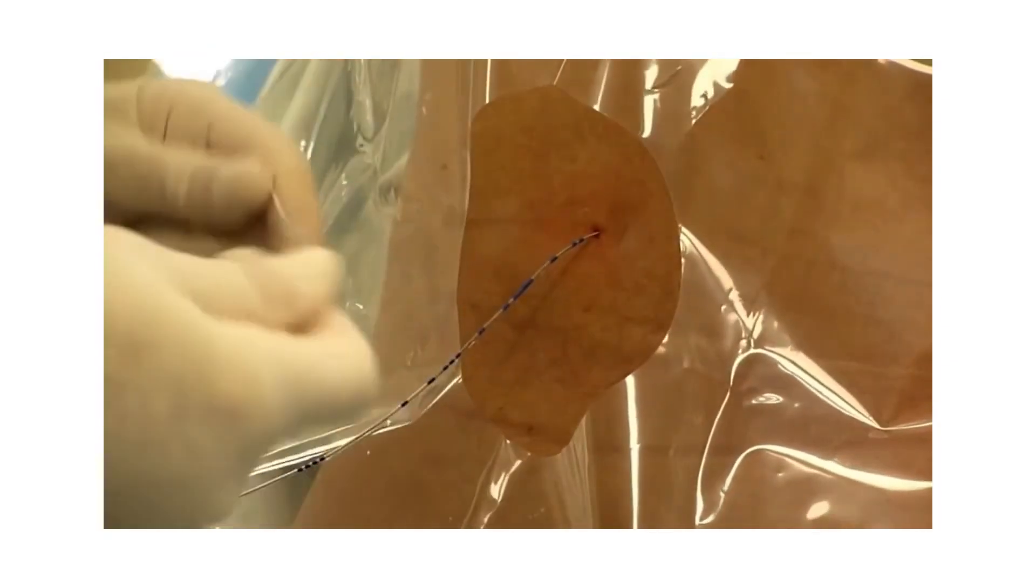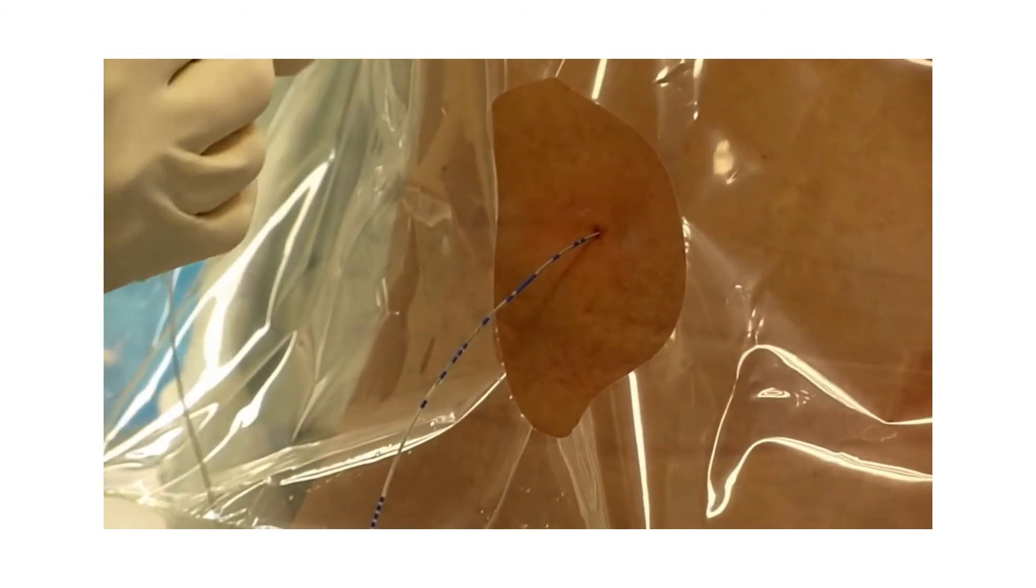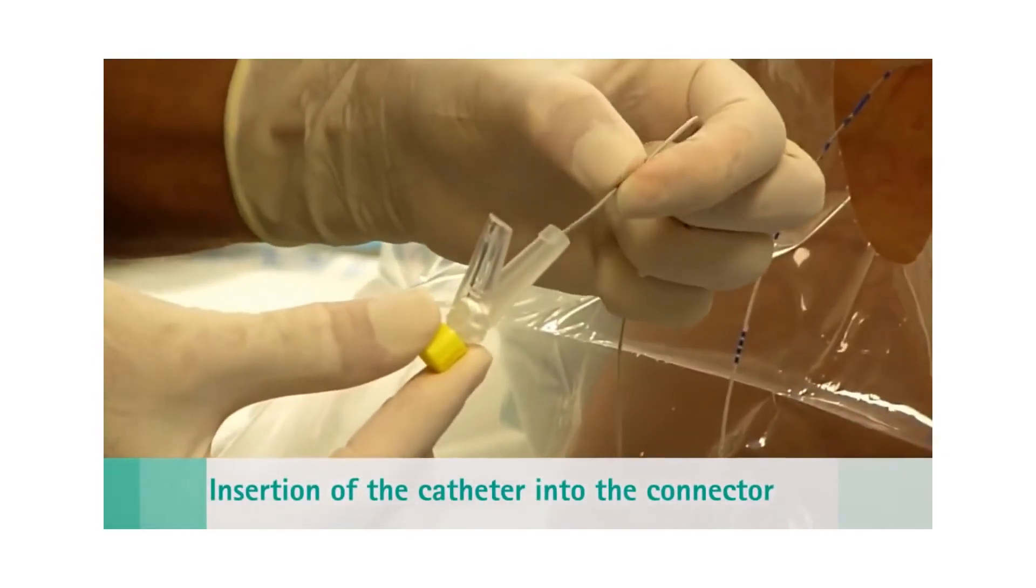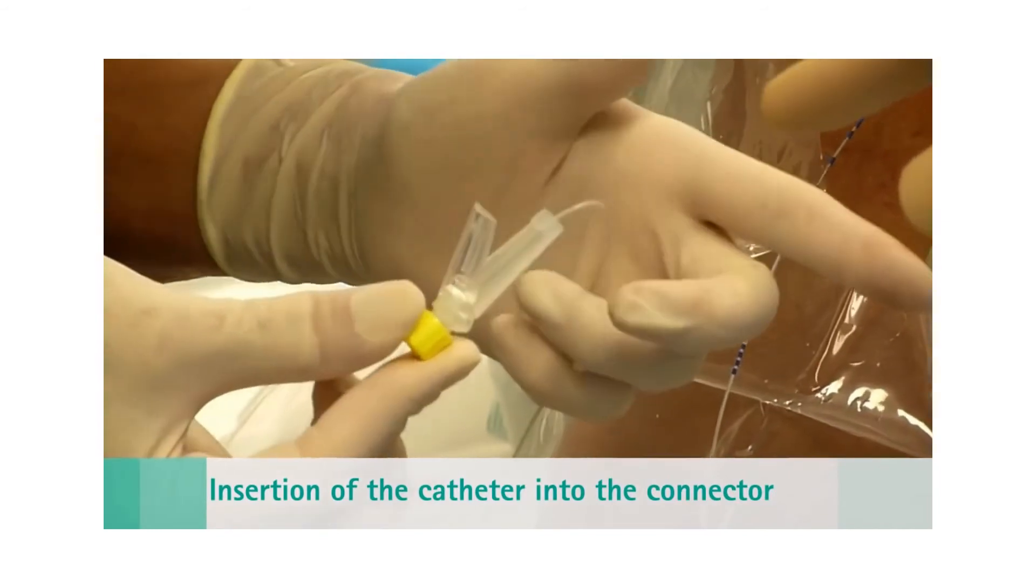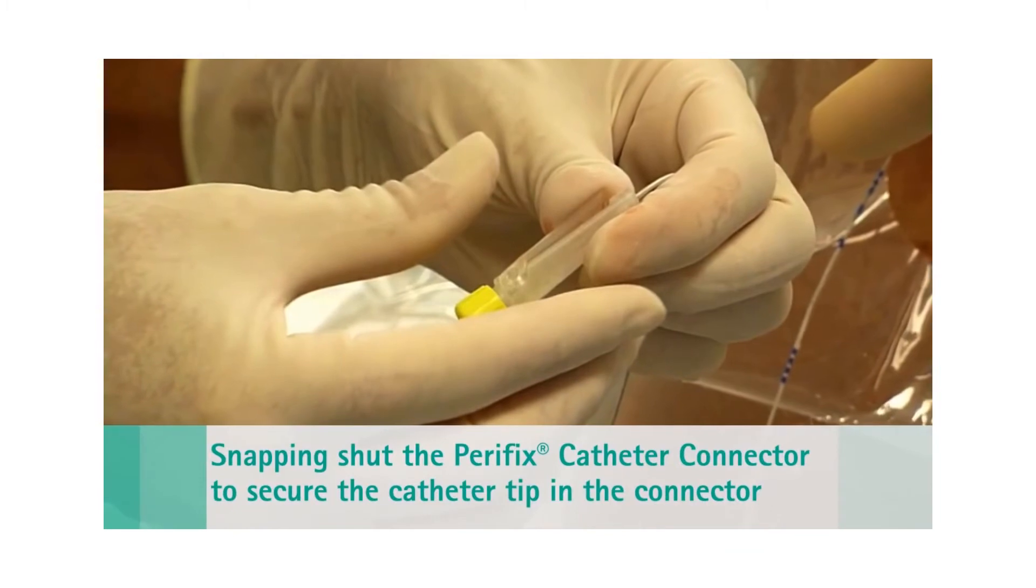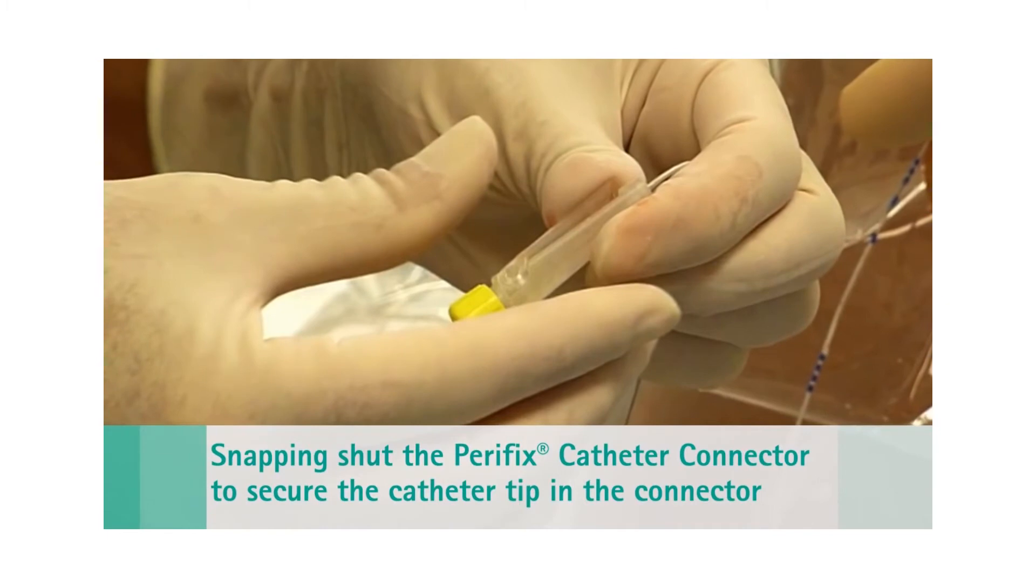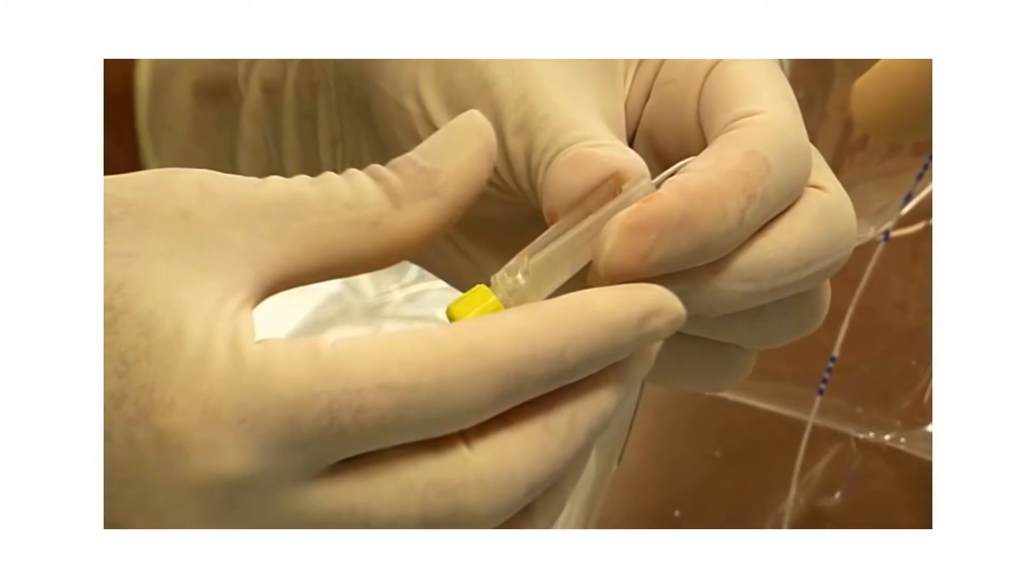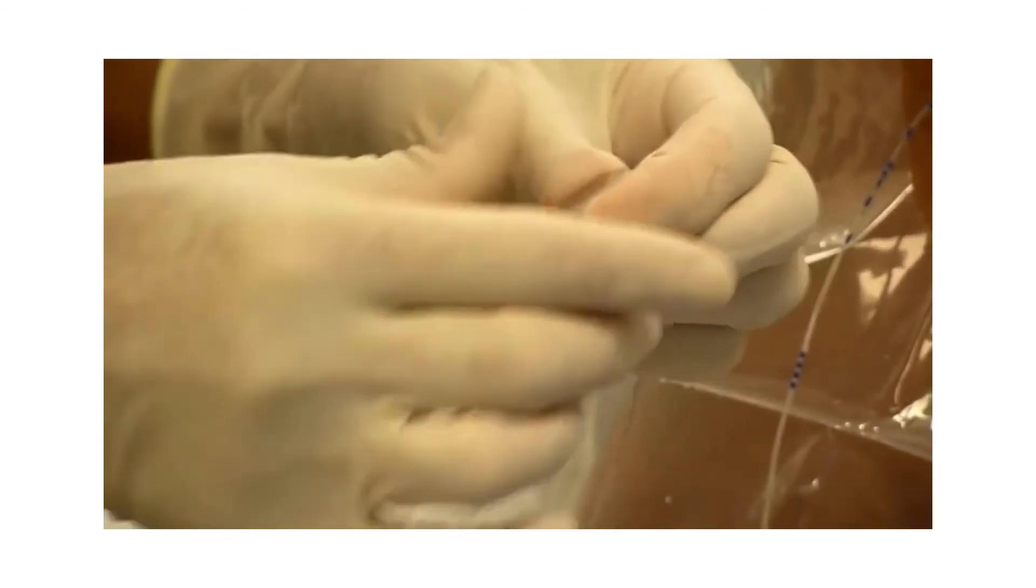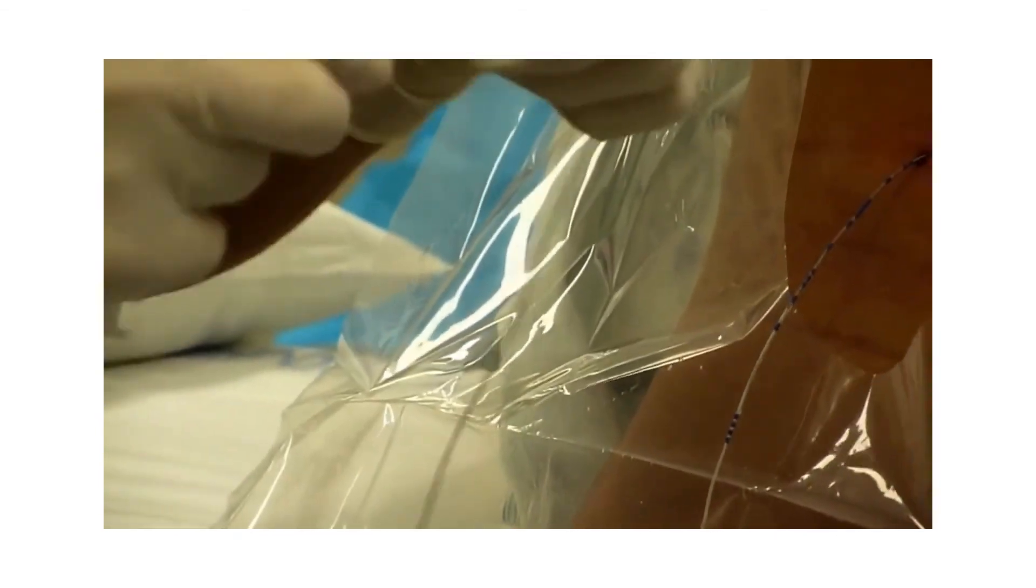The catheter is now in the epidural space, and the patient has received her spinal anesthetic. The Perifix catheter connector that is attached to the end of the catheter is now snapped into place. You have to make sure that when you advance the catheter into the catheter connector, you advance it all the way to the connector hub, which is approximately 3 centimeters, to avoid catheter occlusion, and you confirm proper connection by tugging on the catheter to ensure that it is held in place.